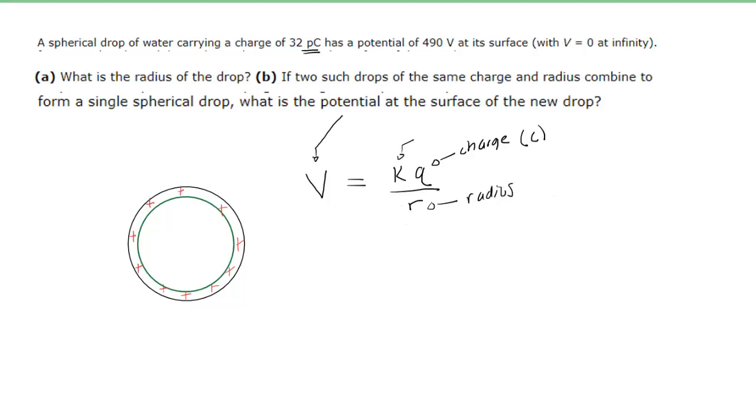So it might be helpful first to rearrange the equation and solve it for radius, since that's what part A of this question is asking. In order to isolate the radius, we can first multiply both sides of the equation by R. The R's on the right-hand side will cancel, so then we have VR equals KQ. To finish isolating R, we can divide both sides of the equation by V, so that these cancel on the left-hand side. This gives us the radius of this spherical drop of water as equaling K times Q divided by V.